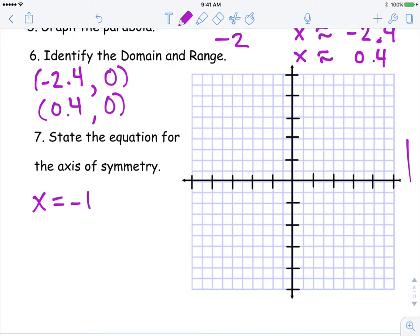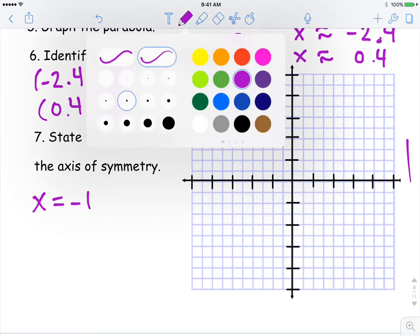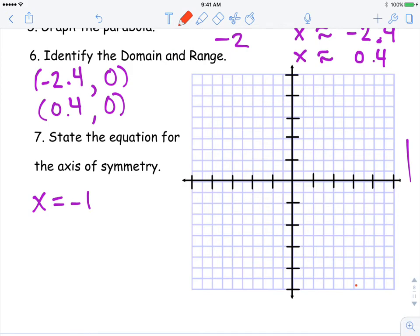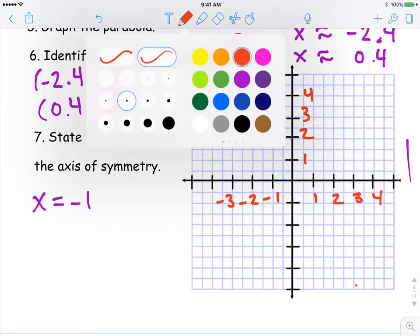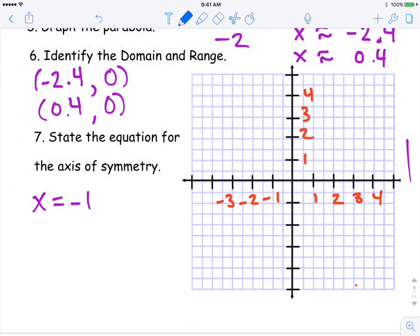Alright. Now we're ready to go ahead and graph this function. So to graph it, we're going to identify the important pieces on the graph. So I'm going to go ahead and just stretch out this graph a bit. Alright. So our vertex was negative one up two. Our one x-intercept was at negative 2.4 and then 0.4. And then our y-intercept was over zero up one.